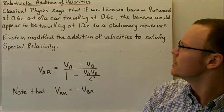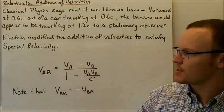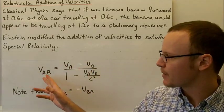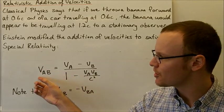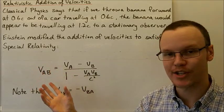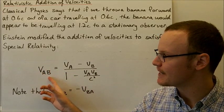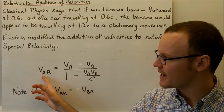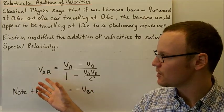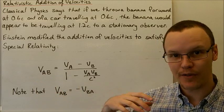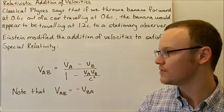So Einstein modified the addition of velocities to satisfy special relativity. He came up with this formula here. Now just a note on notation: when we've got AB here, this is the velocity of A relative to B — that means the velocity of an object A travelling relative to B.